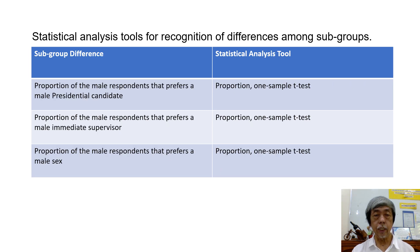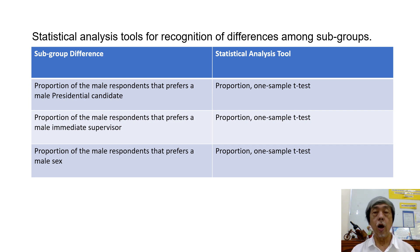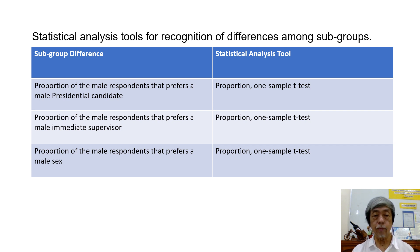These are the statistical tools for the recognition of differences among subgroups in the particular study. For the proportion of the male respondents that prefers a male presidential candidate: proportion and one-sample t-test. For the proportion of the male respondents: proportion and one-sample t-test. For the proportion of the male respondents that prefers a male sex: proportion and one-sample t-test.